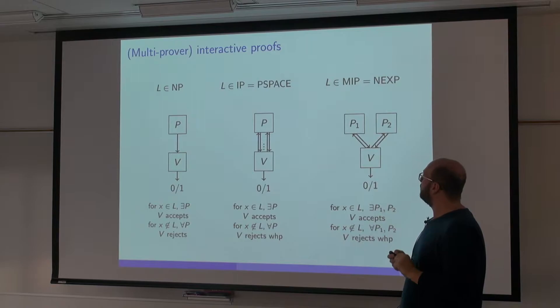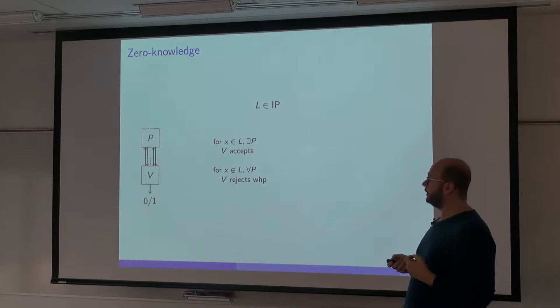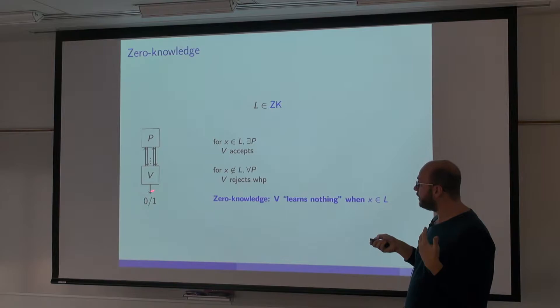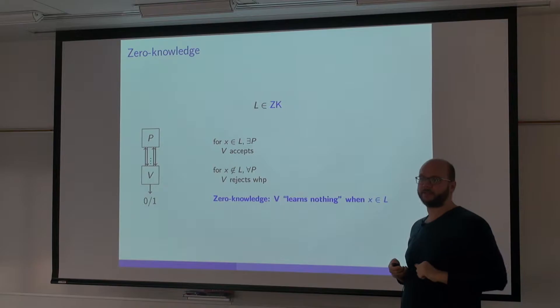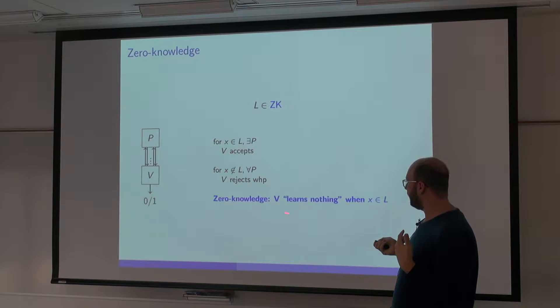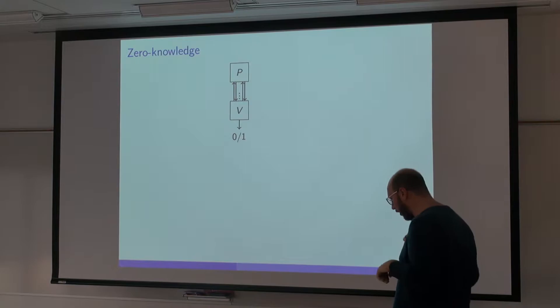In cryptography, we are also interested in another property called zero-knowledge. In zero-knowledge, what we want is that the verifier, after interacting with this prover, learns nothing from this interaction — everything that the verifier learned could have been computed by herself. This is very counter-intuitive, so let me explain how we formalize this notion.